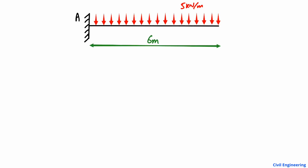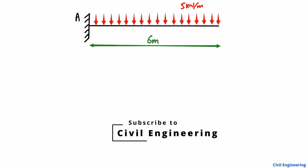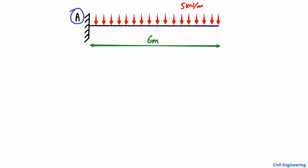Hello guys, welcome back to the Civil Engineering YouTube channel. Please subscribe our channel for daily civil engineering videos. Today we are going to analyze a cantilever beam with uniformly distributed load. We are going to find out the support reactions and draw the shear force and bending moment diagram. There is a cantilever beam with a fixed support at A and a load of 5 kN per meter acting throughout the length of 6 meters.